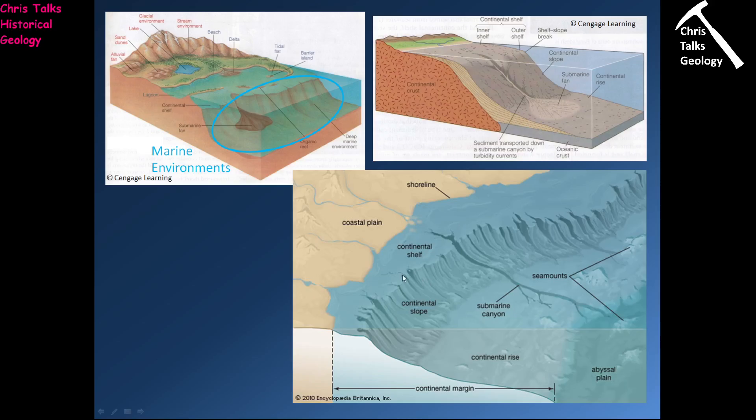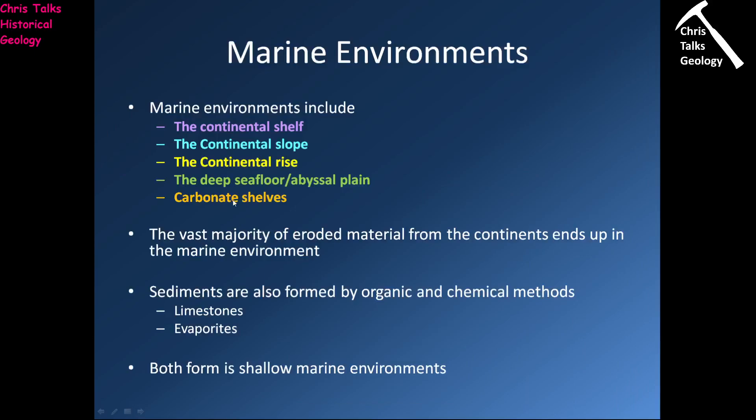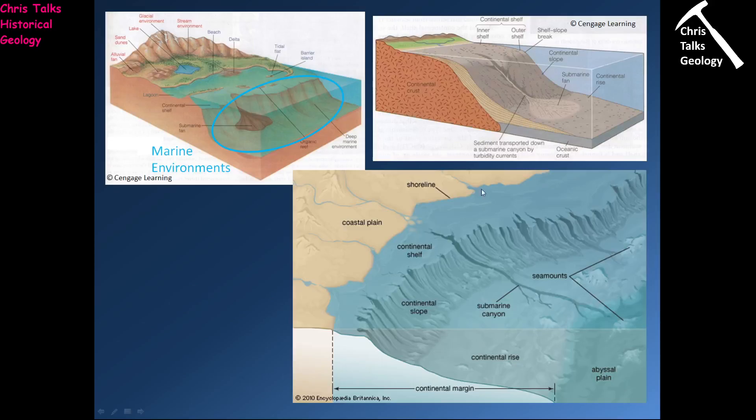We also have carbonate shelves and evaporites, but those two environments will tend to be located within specific areas of the continental shelf where specific conditions are met. The vast majority of the marine environment is going to be dominated by clastic sediment — material being eroded from the continent and deposited into the ocean basins.